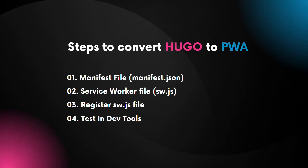To achieve this transformation, there are two crucial elements to keep in mind. First is the manifest.json file — a JSON file that contains metadata about your web application such as its name, icons and display preferences. Configuring this file properly ensures your web app can be installed on user devices like a native app. Then we have the service worker file, sw.js. This is a JavaScript file that runs in the background and handles tasks like caching, offline functionality and push notifications.